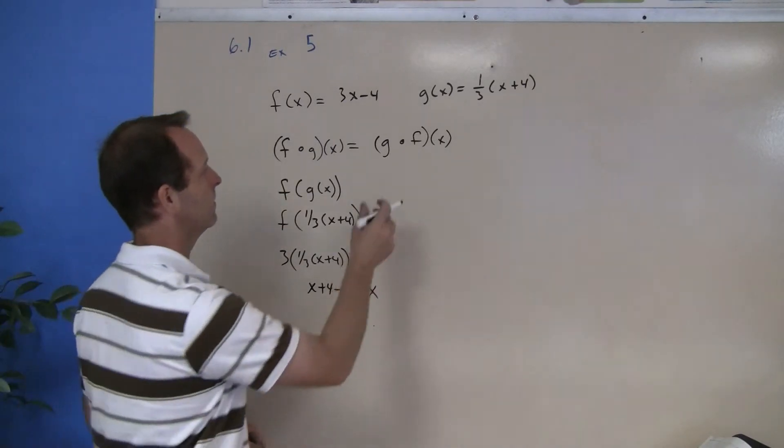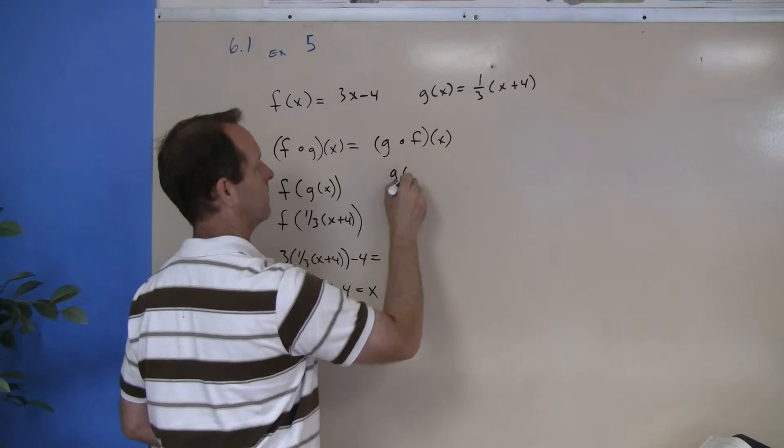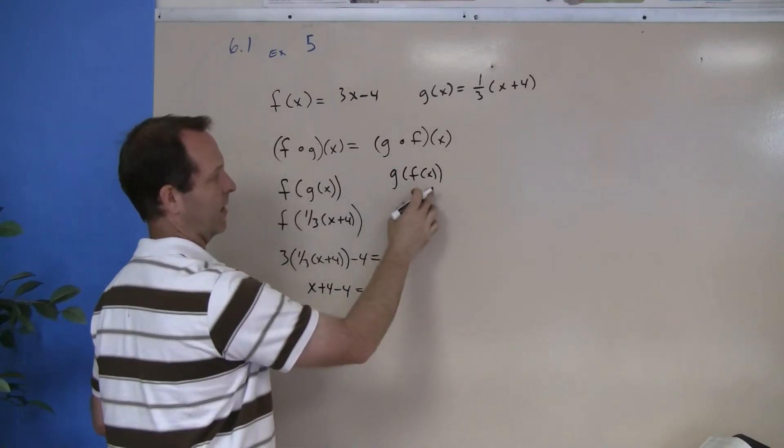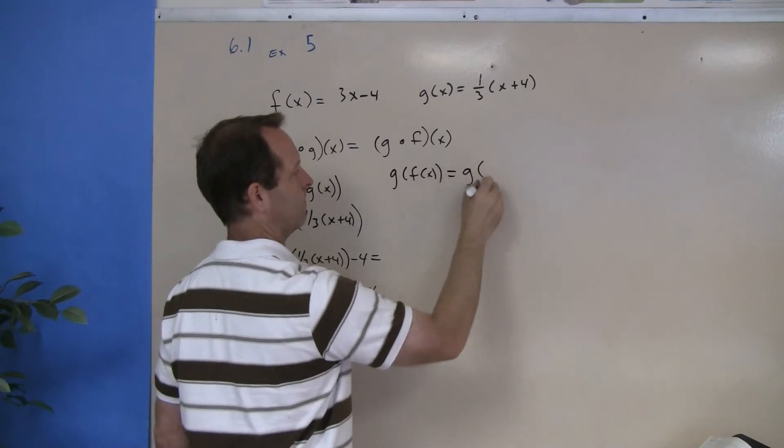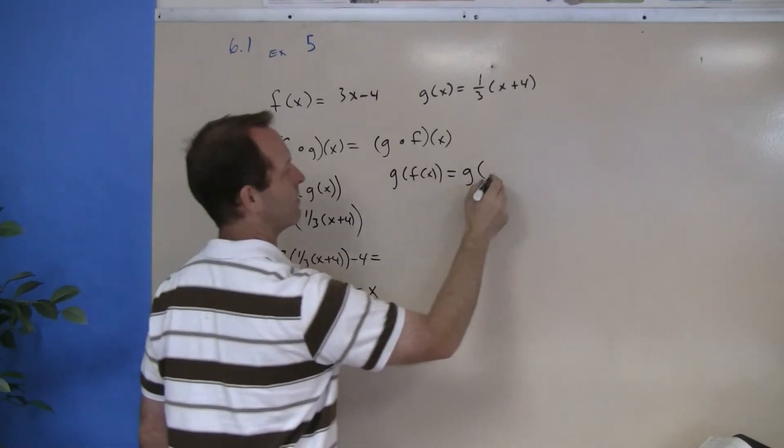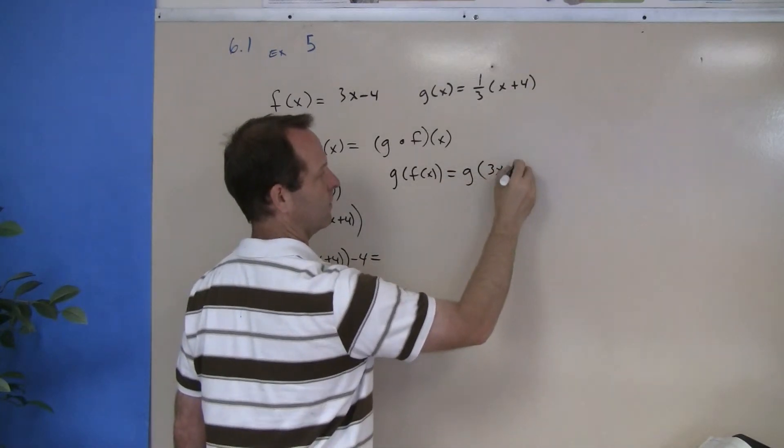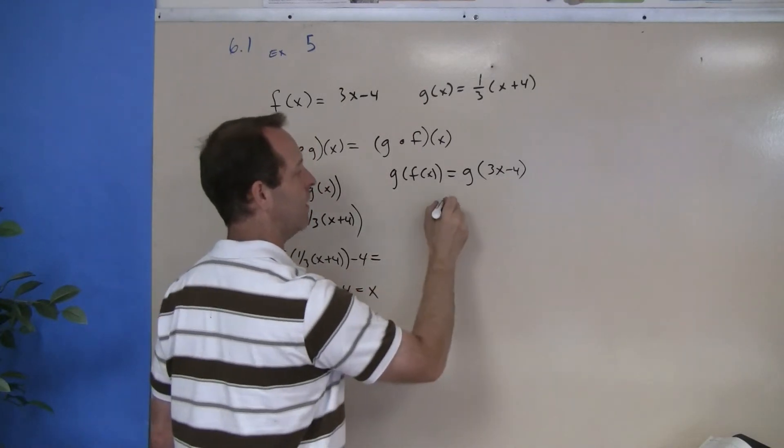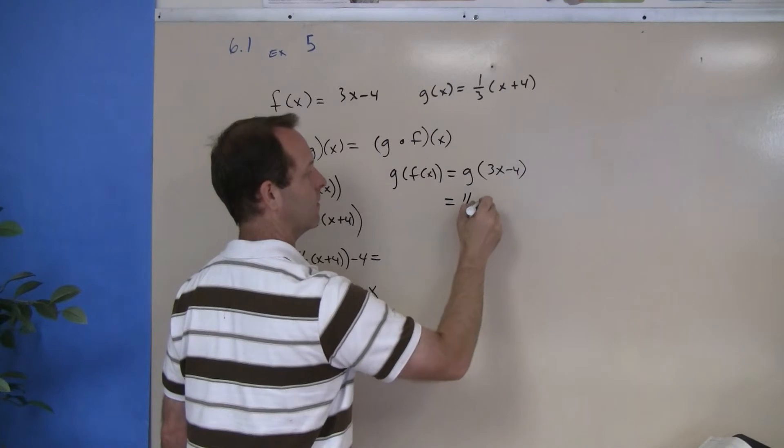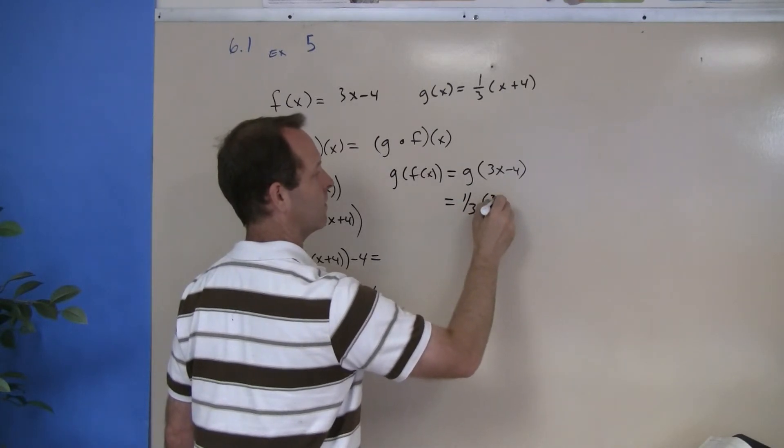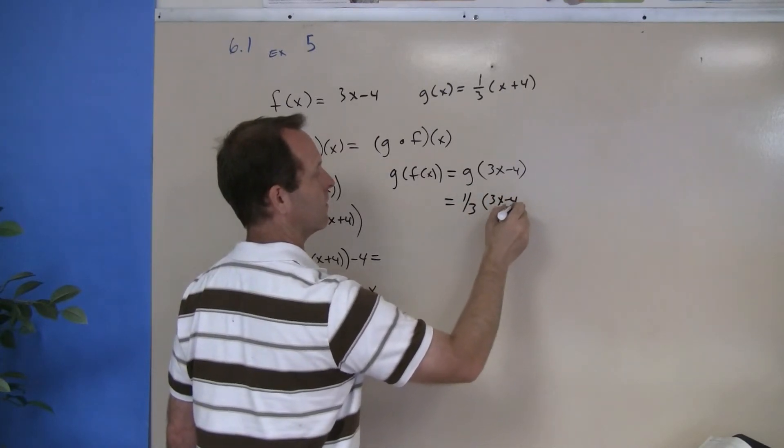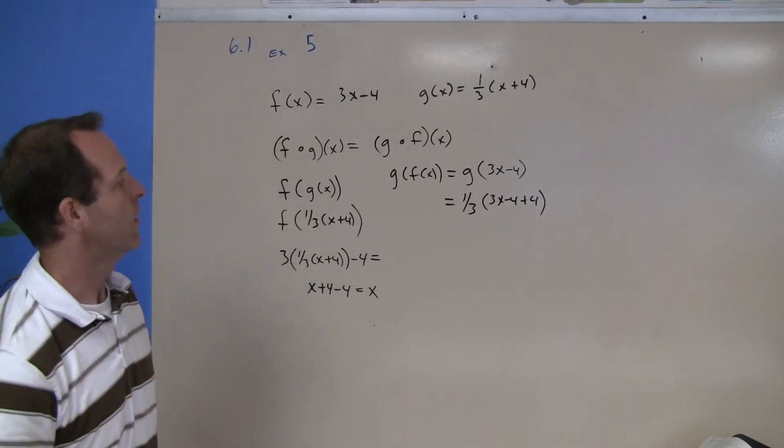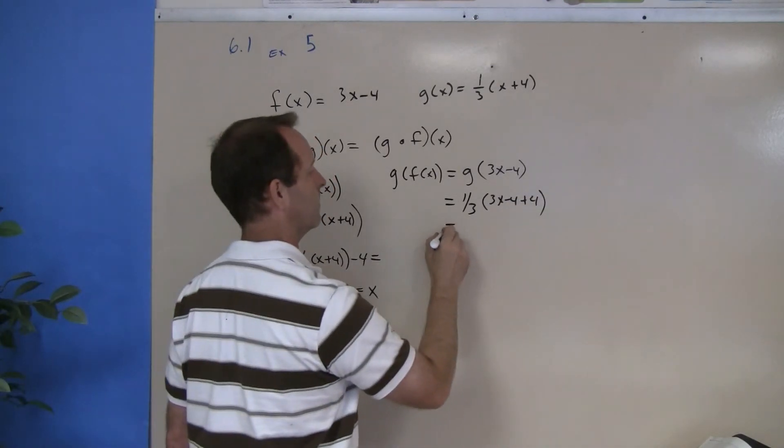Now let's reverse it around. So I'll take g of f of x. f of x is three x minus four. That's my value I put into the g function.